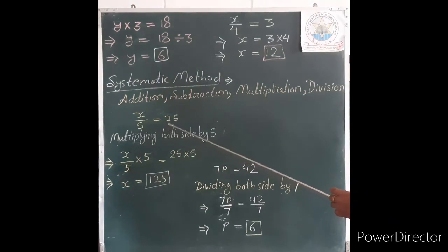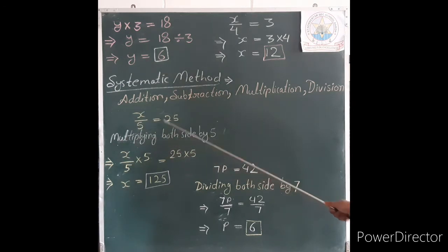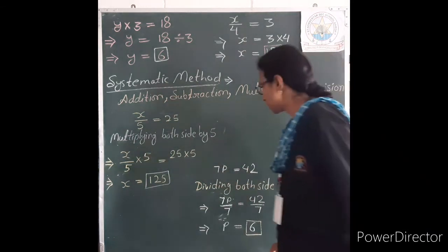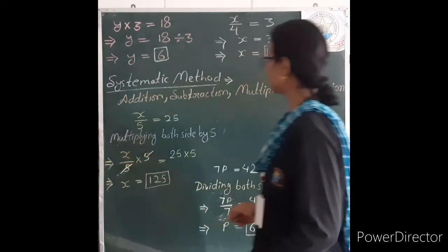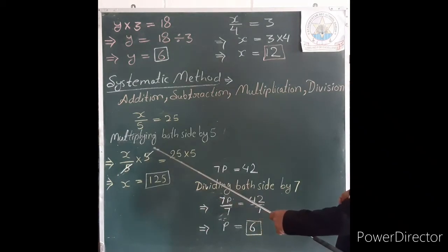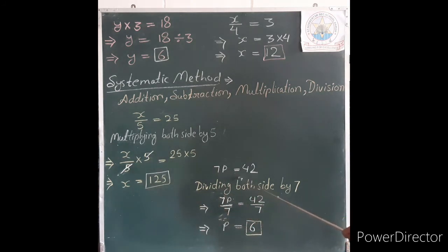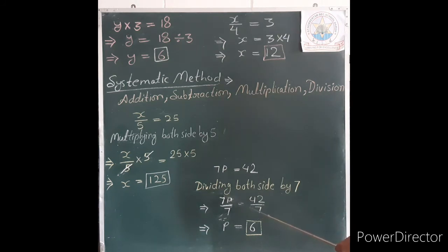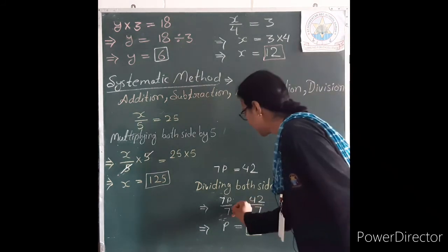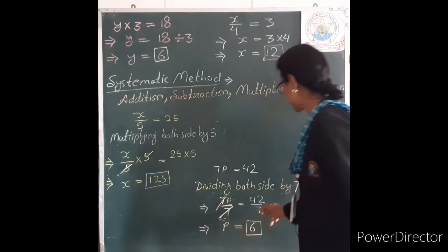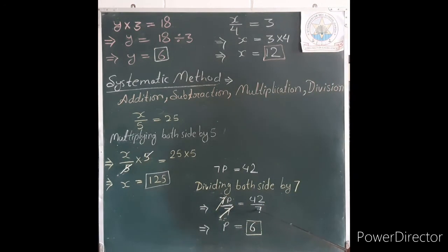For example, x divided by 5 is equal to 25. We multiply both sides by 5: on the left side, 5 divided by 5 cancels out, and on the right side 25 multiplied by 5 gives 125, so x is equal to 125. Another example: 7p is equal to 42. We divide both sides by 7: 7p divided by 7 gives p, and 42 divided by 7 gives 6, so p is equal to 6.